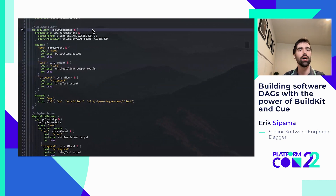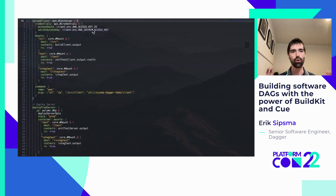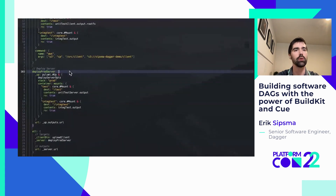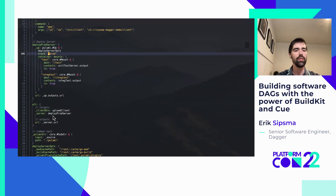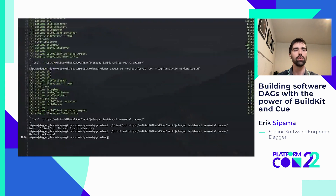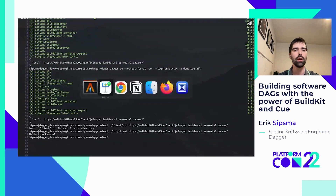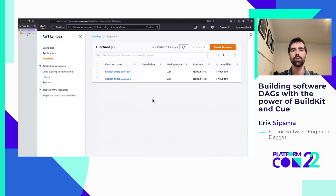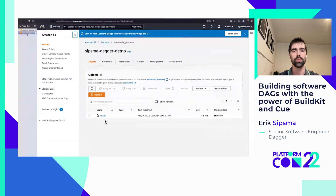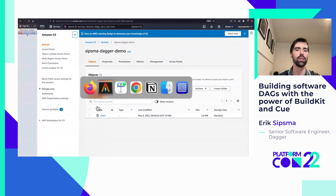So the upload client step just puts it in an S3 bucket, and then deploying to prod is the exact same thing we did before with the integration test, except now we've said use a different stack. There's an 'all' target which will run all of it, but it'll only rerun things when it actually needs to. I pre-ran this to save time — a clean deploy took a little over two minutes. It built the client, built the server, built everything. You can see in the Lambda console those are the AWS Lambda functions, and here's the S3 bucket with the client in it.